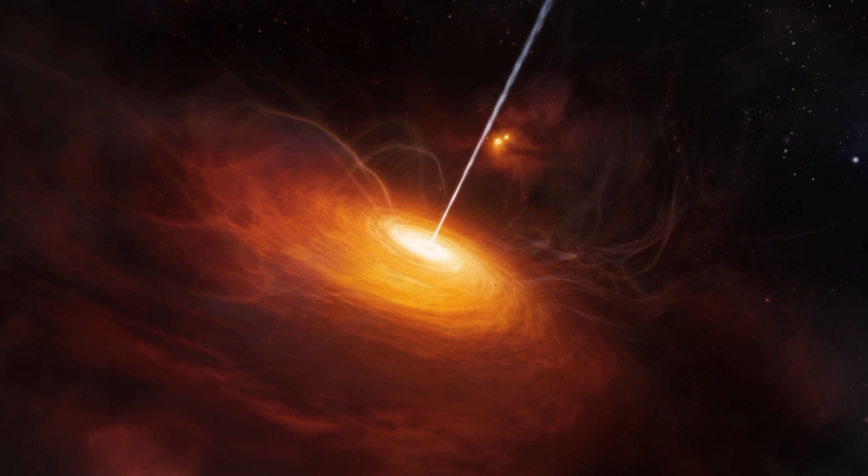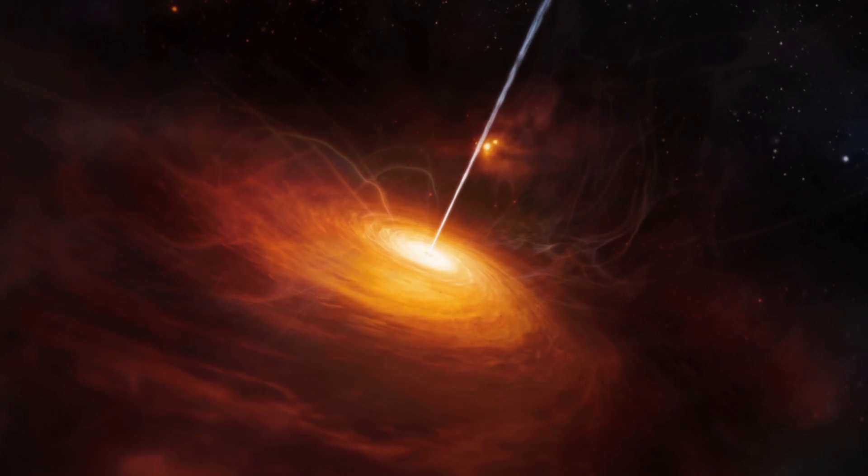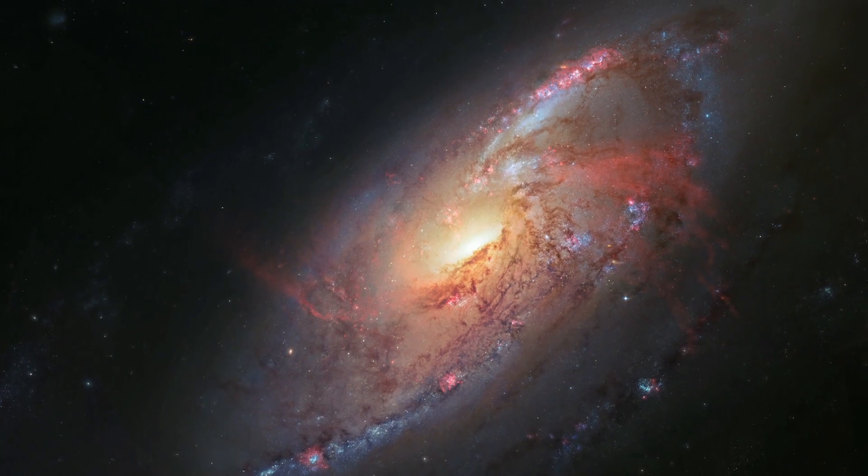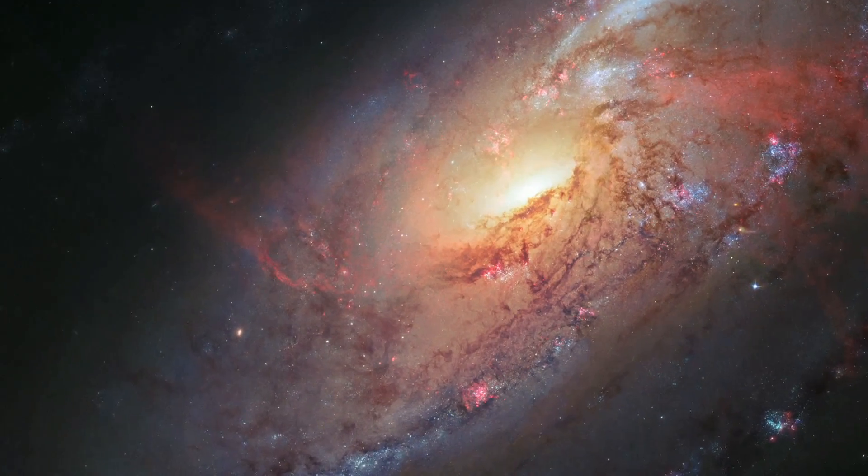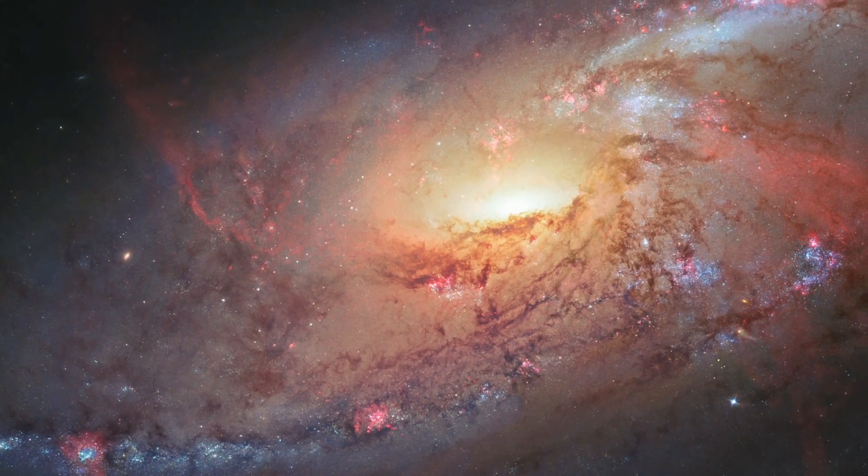However, this emission is not the most intriguing feature of this spiral galaxy. This image shows the galaxy's other not-so-hidden secret. Alongside its two regular, star-packed spiral arms, it appears to have two more made out of hot, glowing gas.